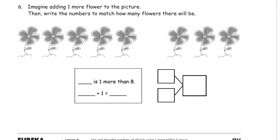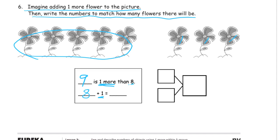Now our last one, number six. Imagine adding one more flower to the picture. Then write the numbers to match how many flowers there will be. Here we have a five group. You don't have to circle that, but I like to circle my five groups just to recognize that. It's a unit of five. That's five, six, seven, eight. So there's eight. We're going to imagine there's one more. If there's one more, then there would be nine. So nine is one more than eight. If we're going to write that as an addition sentence, our addends are going to be the one more, the plus one, and we had the eight to start with. The total would be nine. So our total is nine, and our addends are eight and one.